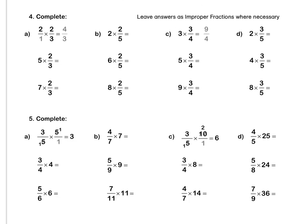Question 4. We can leave answers as improper fractions where necessary. For our first question, we have 2 times two thirds, so we write it over 1. We can't simplify anywhere, so we multiply out. For this sum, we have 5 wholes, so we can write it over 1 to make it easier. We can't simplify any top or bottom, so we multiply out to get 10 over 3. Press pause to complete questions A and B by yourself.